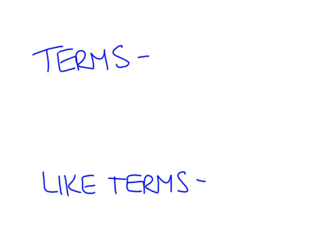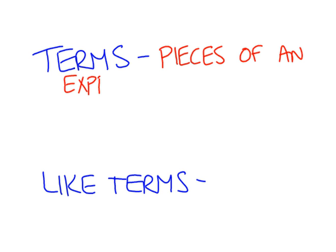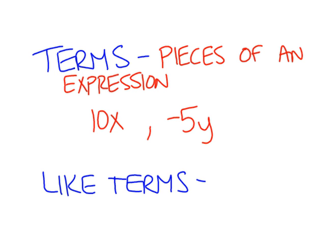Our next word is terms. We already saw some examples of terms within our expression. Terms are just the pieces — the individual parts of an expression. So instead of being combined with addition or subtraction symbols, it's just the individual parts. We might have something like 10x, or negative 5y, or even just the number 3. All of those would be terms.